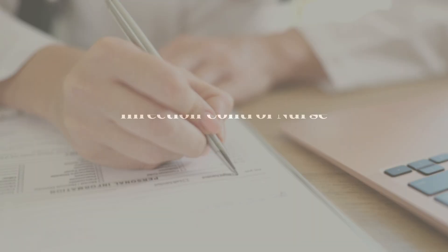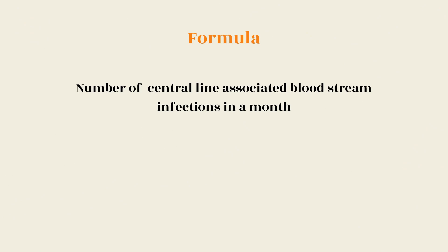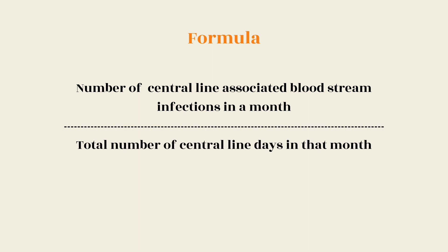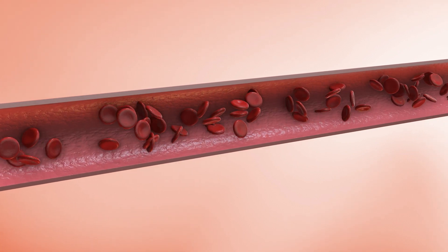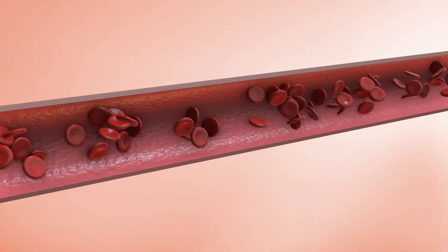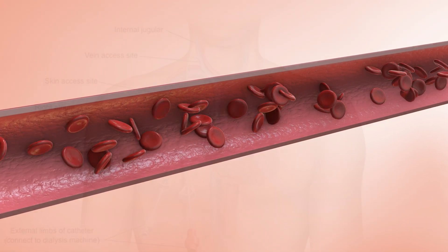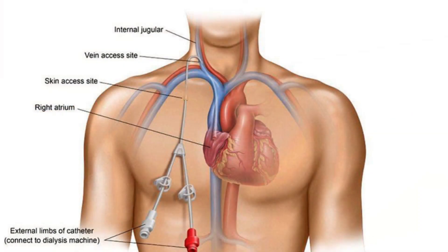The formula: numerator is the number of central line associated bloodstream infections in a month; denominator is the total number of central line days in that month, multiplied by 1000. Sample size: not applicable. Note — CLABSI and transfusion reactions are to be monitored differently. CLABSIs are serious infections that can occur when bacteria enter the bloodstream through a central line.